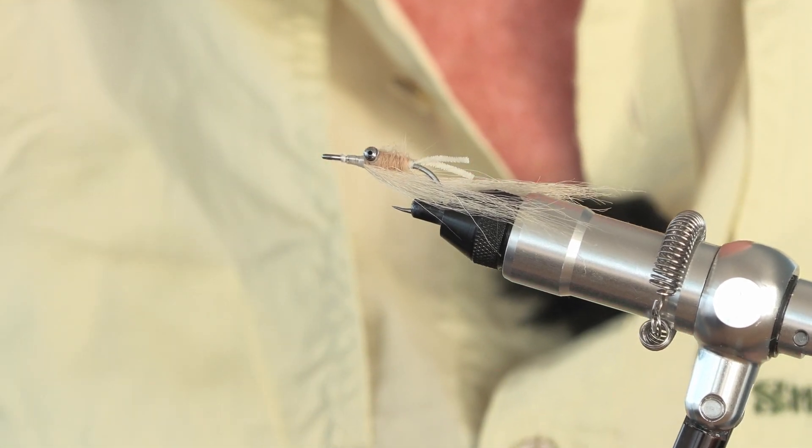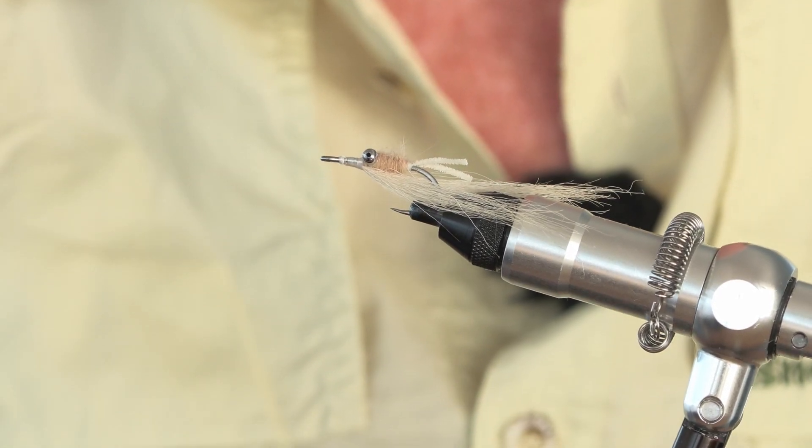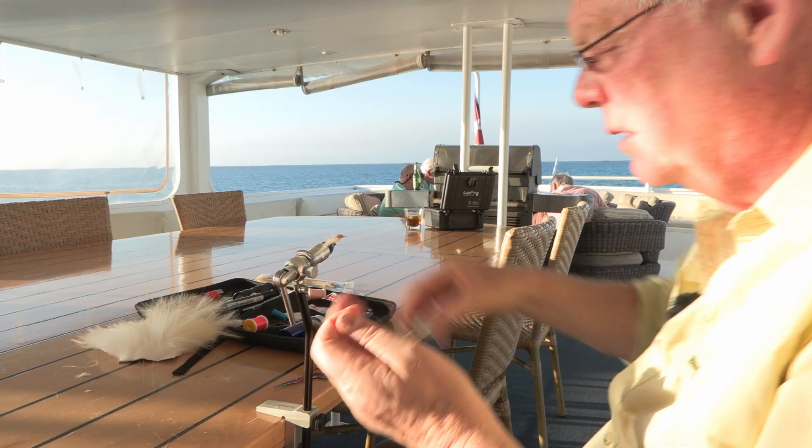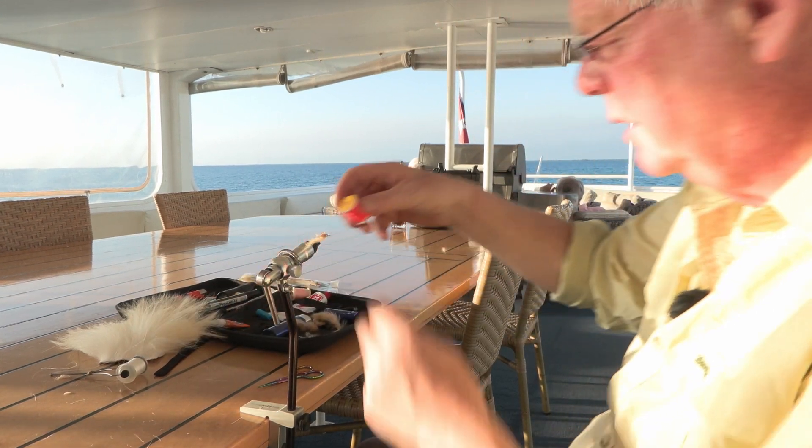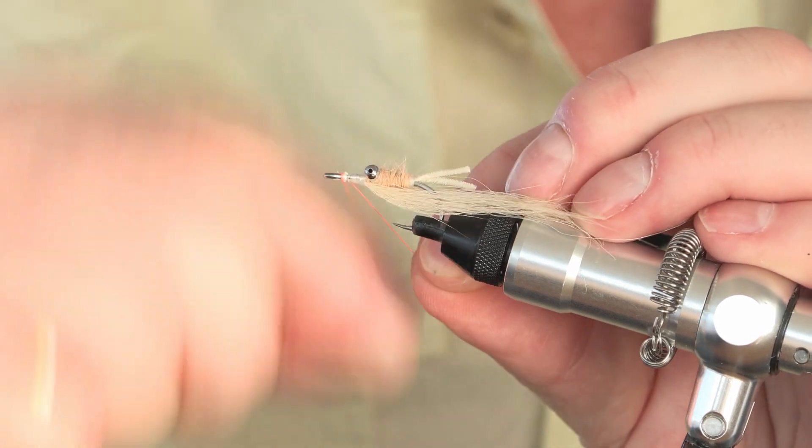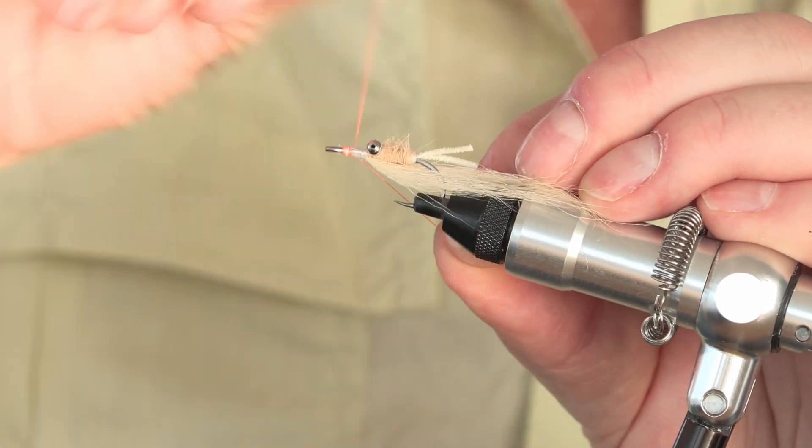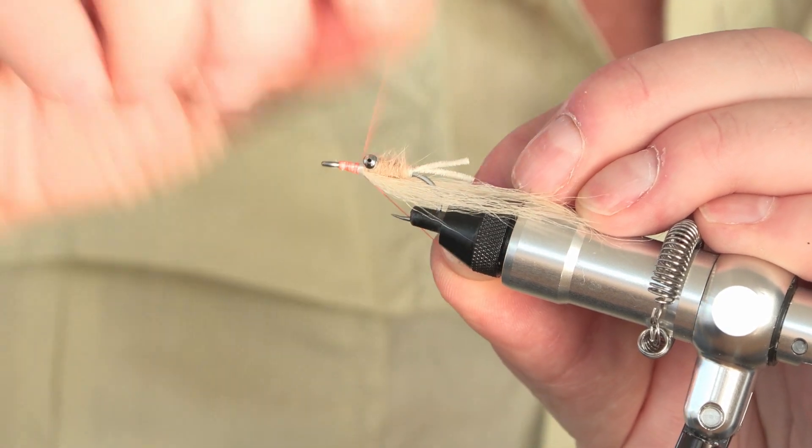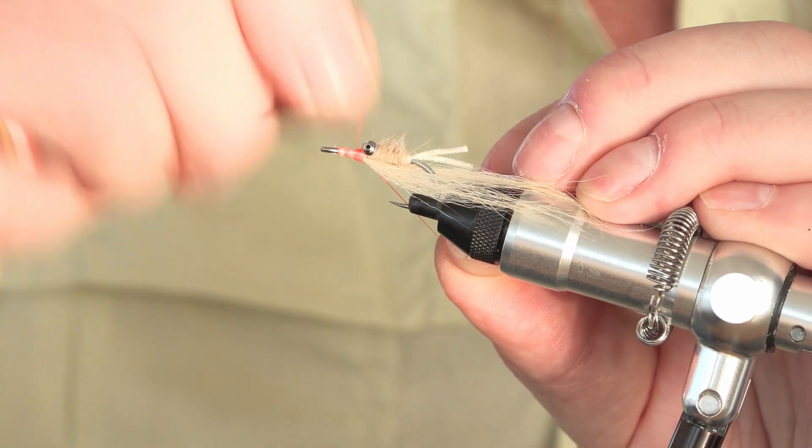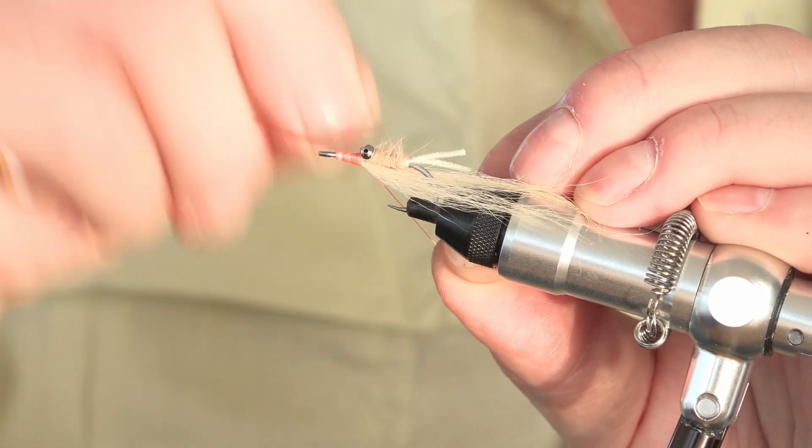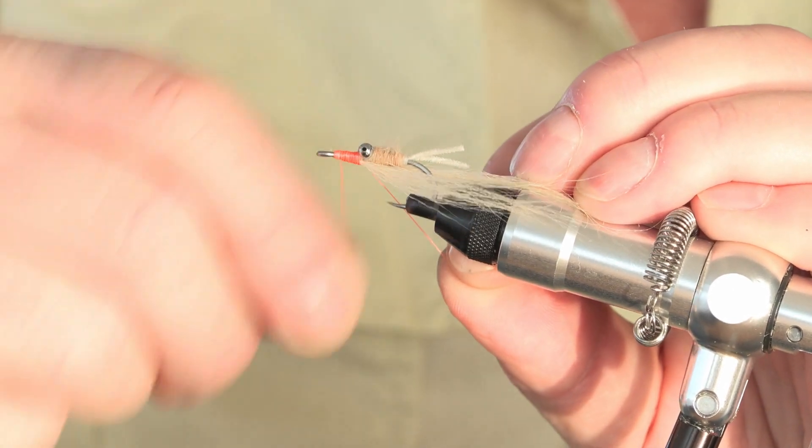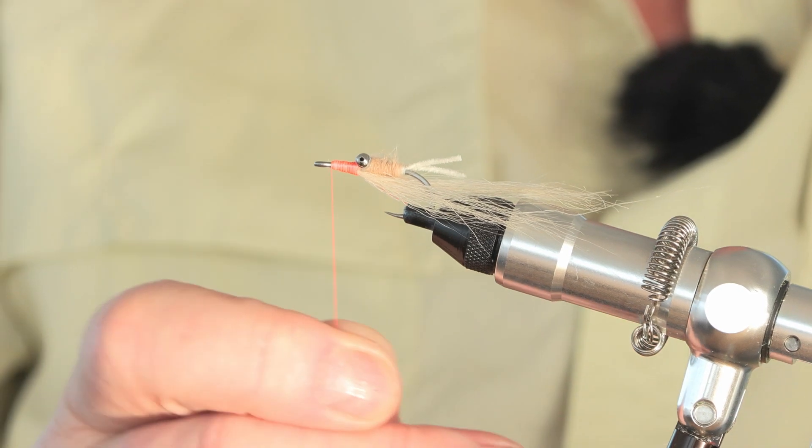And I find that to have a colored head, especially a red head on a gotcha, really triggers the fish into taking. So for that I just get some normal red tying silk and then I just finish off the fly by building a red carrot shaped head. Put plenty of turns on to cover it up, to cover the white tying silk up.